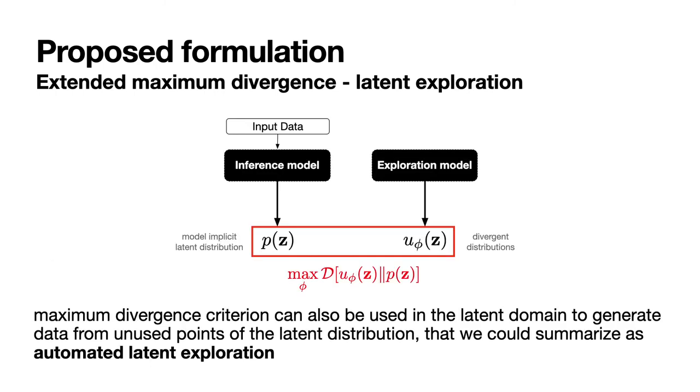Let's think about how we could use maximum divergence in the latent domain. Providing an exploration model that would generate latent parameters, the maximum divergence criterion could be used to locate unused zones of the latent space that do not correspond to any example of the base dataset. This process, that we could name automated latent exploration, could then be interesting to locate the unexpected artifacts of a pre-trained model.